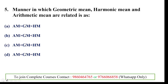Next question: the manner in which geometric mean, harmonic mean, and arithmetic mean are related is AM > GM > HM. Arithmetic mean is the most efficient and significant measure; it considers all observations properly. So the correct relationship is AM greater than GM greater than HM.